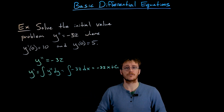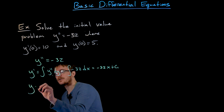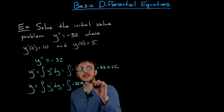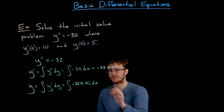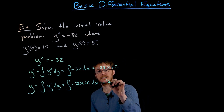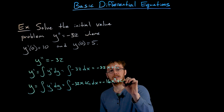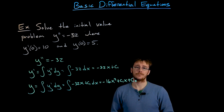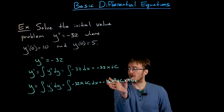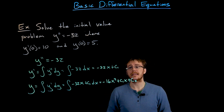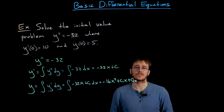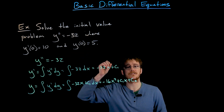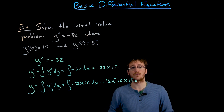We could find c1 now using the initial conditions, but let's leave it general for now. To go from y prime to y, we integrate y prime and find the antiderivative of negative 32x plus c1. Using the power rule, the antiderivative of the first term is negative 16x squared, the antiderivative of the second term is c1 times x, and we add another constant c2 for the most general antiderivative. So the unknown function y has the form negative 16x squared plus c1 times x plus c2. This solves the differential equation for any values of c1 and c2, which is why we call it the general solution.